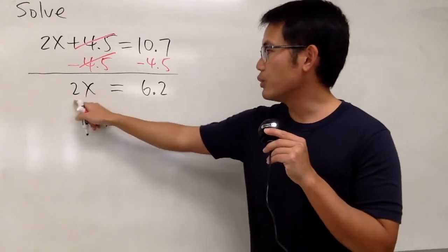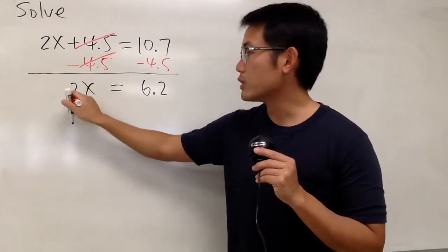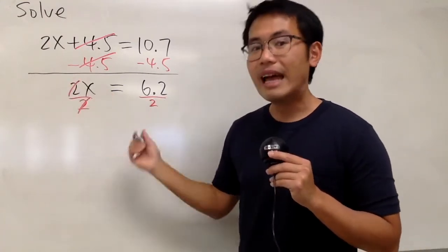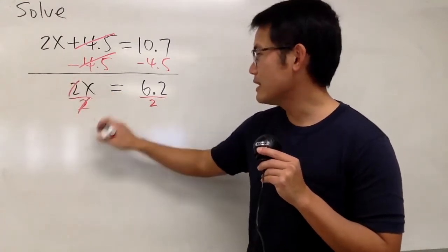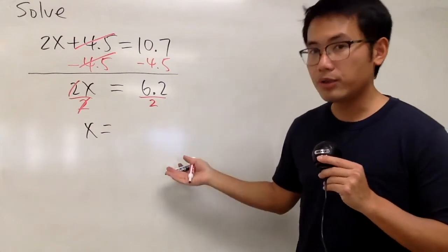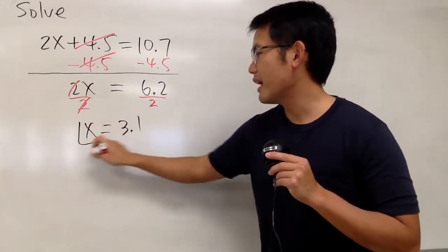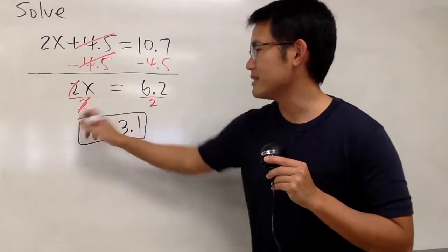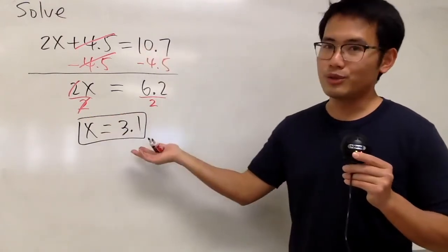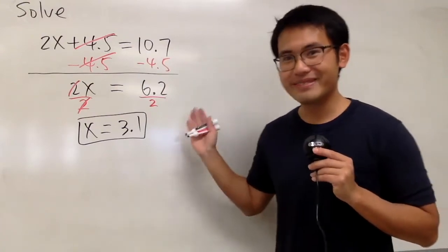And lastly, this is 2 times x, so to get rid of the 2, we will just divide both sides by 2. Cancel, cancel. And finally, we can see that x is equal to 6.2 divided by 2, and that's just going to be 3.1. And that is it. Usually, when the equation starts with a decimal, you may just end up with a decimal — you don't have to change to a fraction. So, that's it.